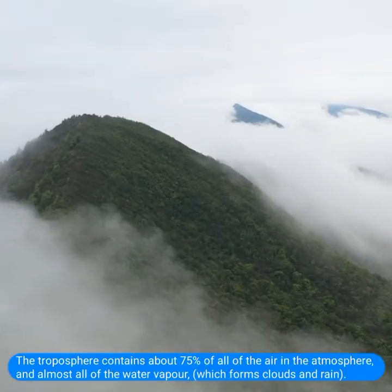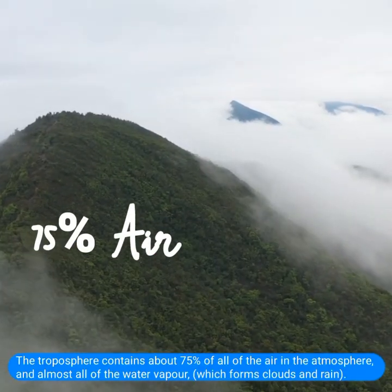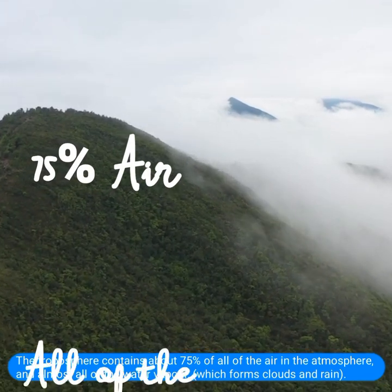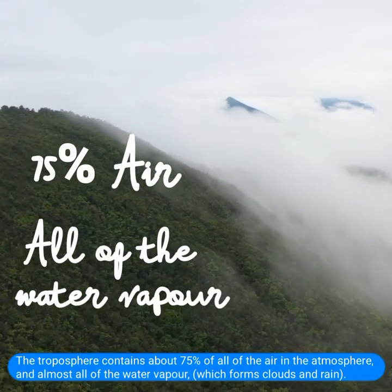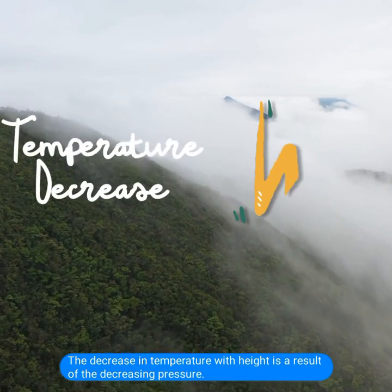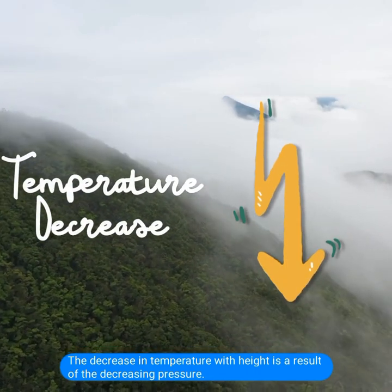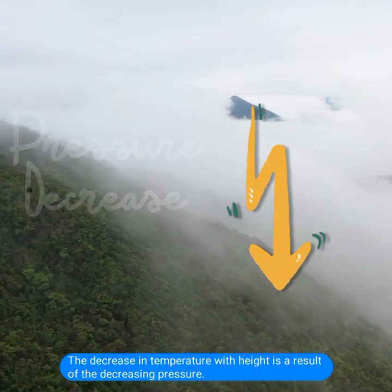The troposphere contains about 75% of all of the air in the atmosphere, and almost all of the water vapor, which forms clouds and rain. The decrease in temperature with height is a result of the decreasing pressure.